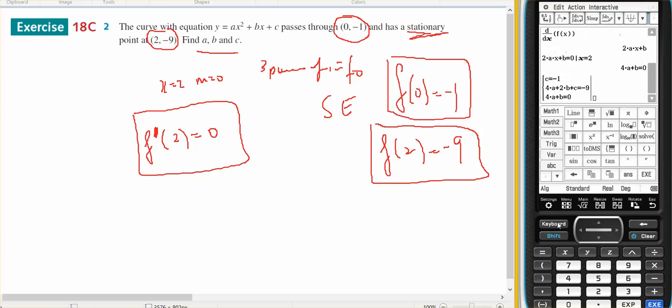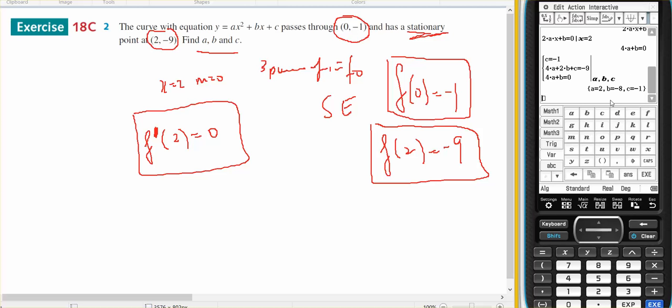I'm going to use my calculator to solve that for a, b, c. That gives me my three values: a equals 2, b equals -8, and c equals -1.